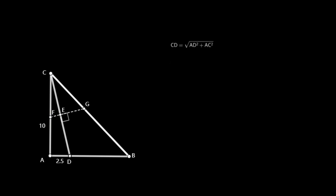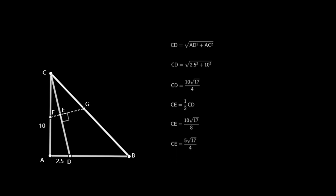The length of AC is equal to 10. By the Pythagorean theorem, the length of CD equals the square root of AD² plus AC², which equals the square root of 2.5² plus 10², equal to 10 times the square root of 17 over 4. The length of CE equals half of CD, which is 5 times the square root of 17 over 4.